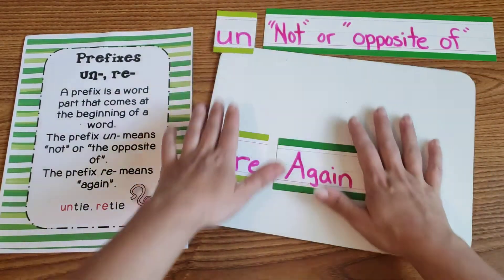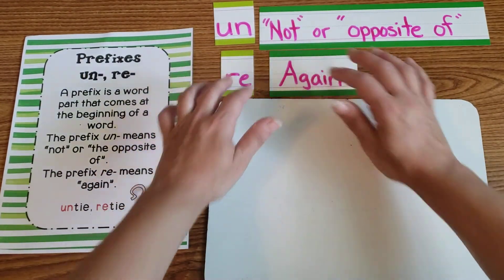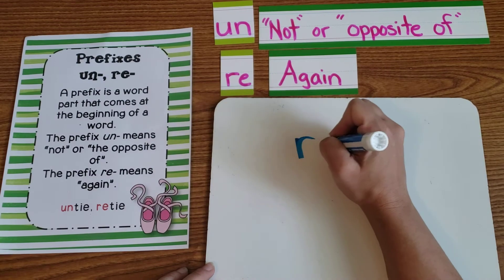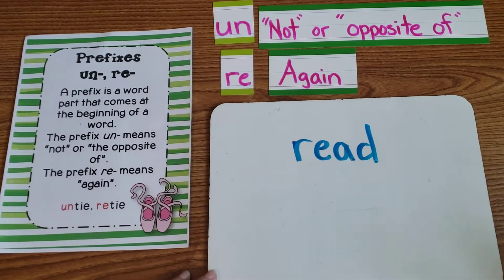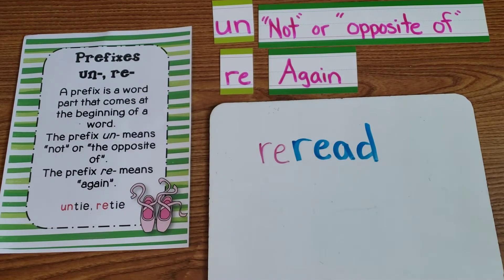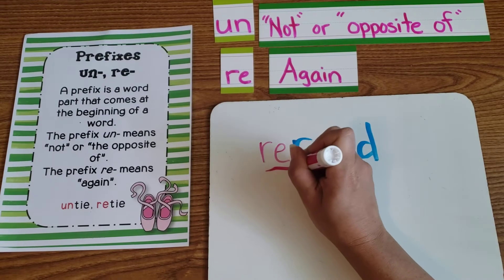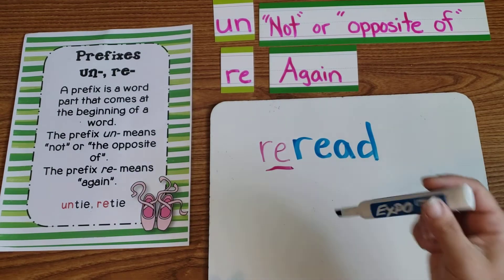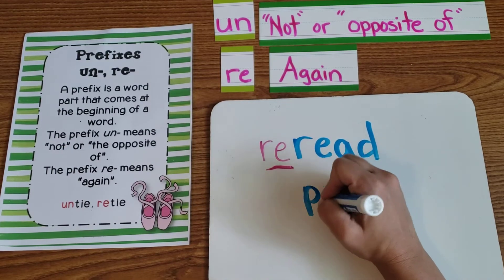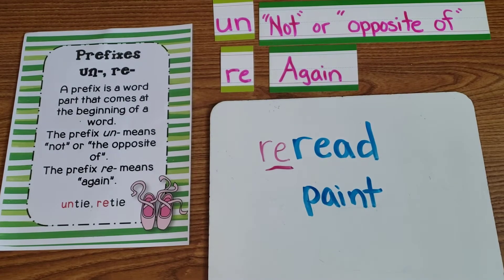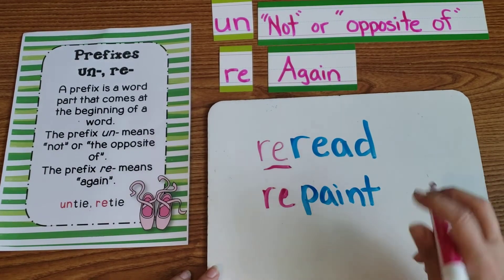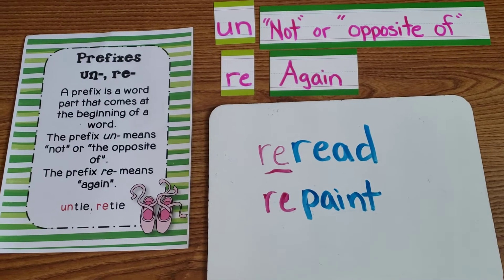Let me show you some examples. I tell you to read the story, and then when you're done I say, 'Why don't you go back and re-read the story?' So when I add the 're' to the beginning of the word, I'm telling you to read it again. If the word was 'paint' — paint a picture — and then I said, 'I think we made a mistake there, why don't you re-paint it?' That means paint it again. So 're' when you add it to the beginning means to do it again.